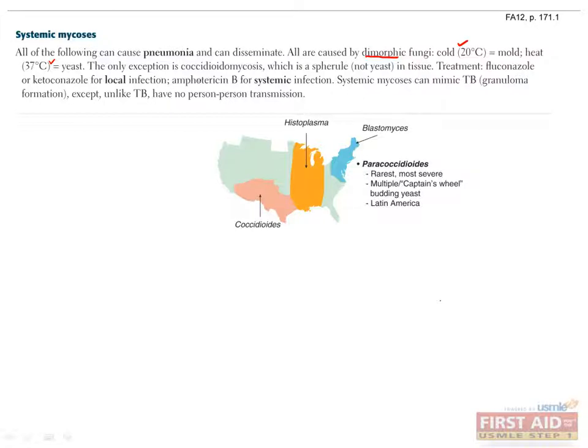The only exception is coccidioides, which exists as a spherule at body temperature. They all cause pneumonia, which can mimic tuberculosis by forming granulomas within the lungs. Remember, however, that there is no person-to-person transmission of these fungal infections. The fungi are transmitted when people inhale particles found in soil or animal droppings, which then travel to the lungs. From there, these fungal infections are capable of disseminating system-wide through the bloodstream and affecting other organs such as the liver, spleen, and adrenals, similarly to miliary TB.